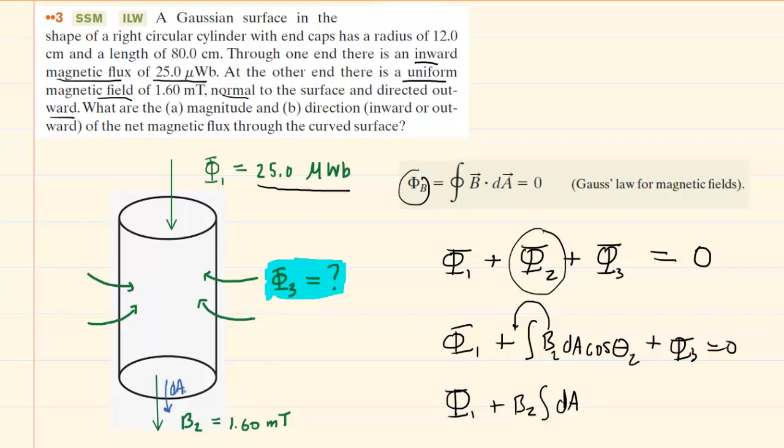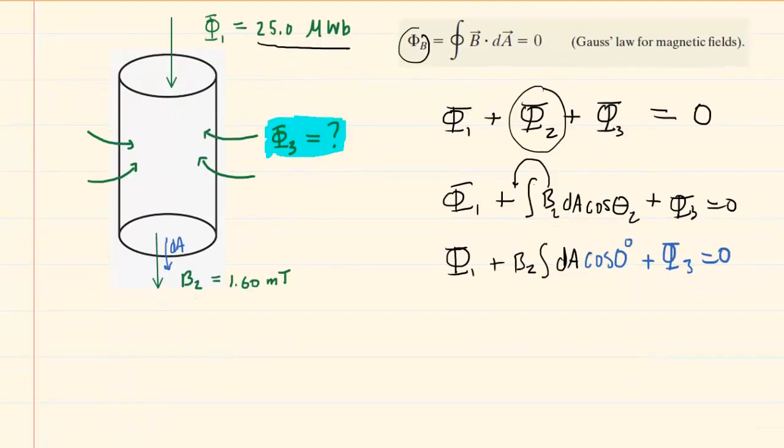And you'll notice that dA and the magnetic field are parallel to one another, and that renders the angle between them as zero degrees. So really, this just becomes the cosine of zero degrees. Now, we all perhaps know that the cosine of zero degrees is equal to one, so we can actually effectively cancel that out.